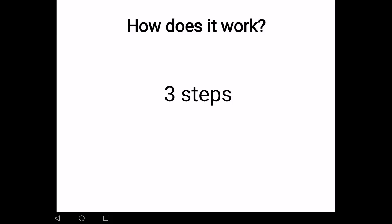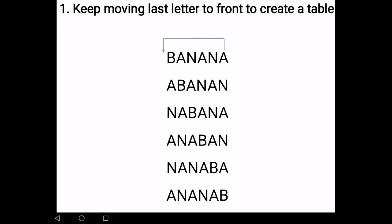How does it work? Three simple steps. First, you keep moving the last letter to the front to create a table. For example, the word banana. You move the last letter A to the front to make ABANAN. And you repeat this again. Move the N to the front, and then move the A to the front. And repeat until the first letter is at the last position.